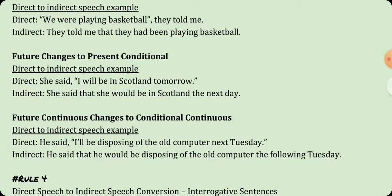Future tense changes to present conditional. For example, 'She said I will be in Scotland tomorrow' becomes 'she said that she would be in Scotland the next day.' Here in indirect speech, 'tomorrow' becomes 'the next day' or 'the following day.' Future continuous tense changes to conditional continuous. For example, 'He said I will be disposing of the old computer next Tuesday' becomes 'he said that he would be disposing of the old computer the following Tuesday.'